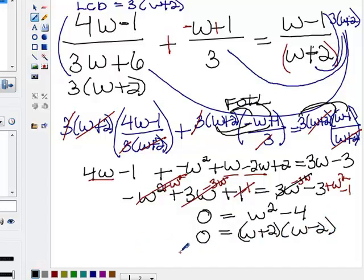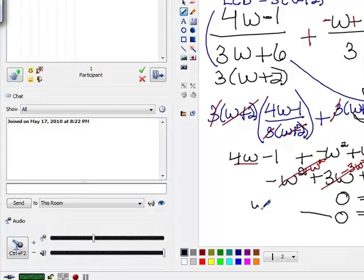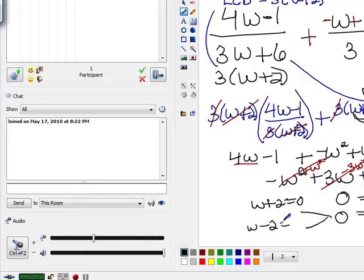So I'm going to solve two equations, w plus 2 equals 0. The other equation will be w minus 2 equals 0. On the first one, subtracting 2 from both sides, I get negative 2. And that's one possible solution. Adding 2 to both sides to this would be w equals 2. And that's the other possible.